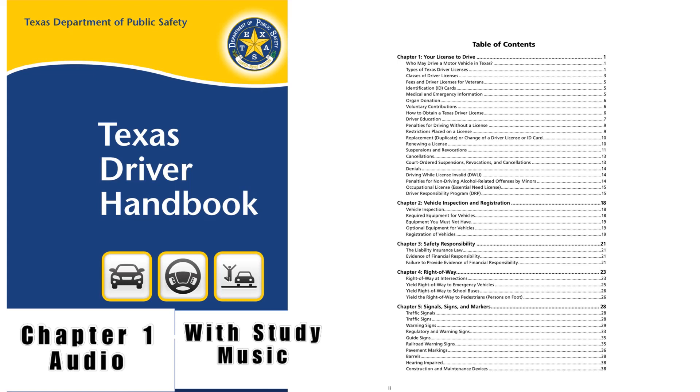Phase 1 requires applicants under 18 years of age to hold a valid learner, hardship, or combination of learner and hardship license for a minimum of six months prior to the issuance of a provisional license. If your license is suspended during Phase 1, the initial six-month period is extended by the number of days of the suspension. A Texas learner license will be issued to new Texas residents who are at least 15 years of age, present an out-of-state instruction permit, and submit a VOE form. A Texas learner license must be held for six months from the date of issuance before the individual is eligible for Phase 2. Phase 1 requirements do not apply to Class M licenses.